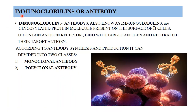Immunoglobulin, or antibody, is present on the surface of the B-cell and is secreted from the B-cell. It recognizes a particular epitope of a particular antigen and tries to neutralize it. According to their antibody synthesis procedure, we can divide them into two classes: monoclonal antibody and polyclonal antibody.